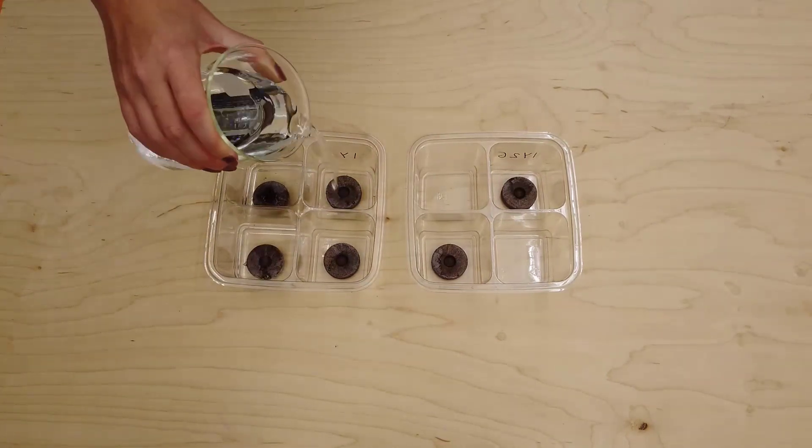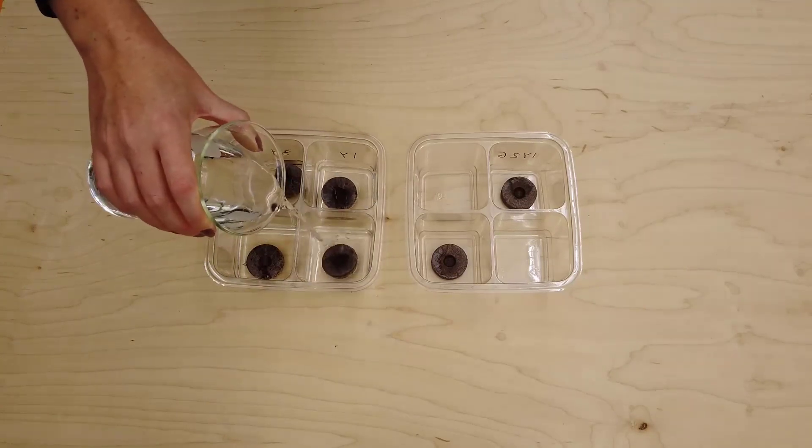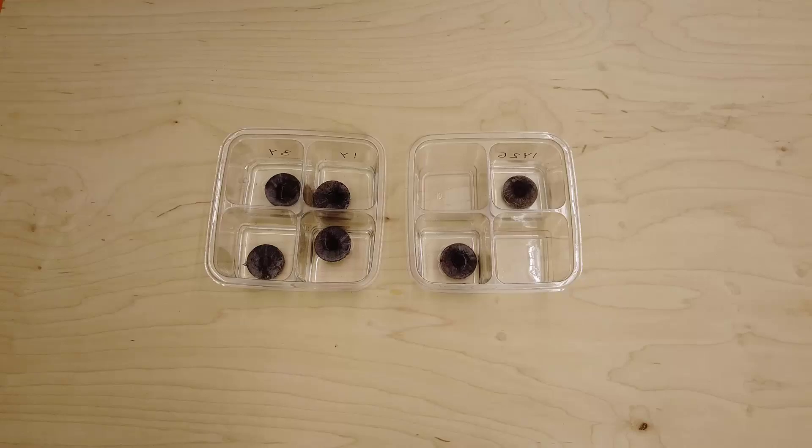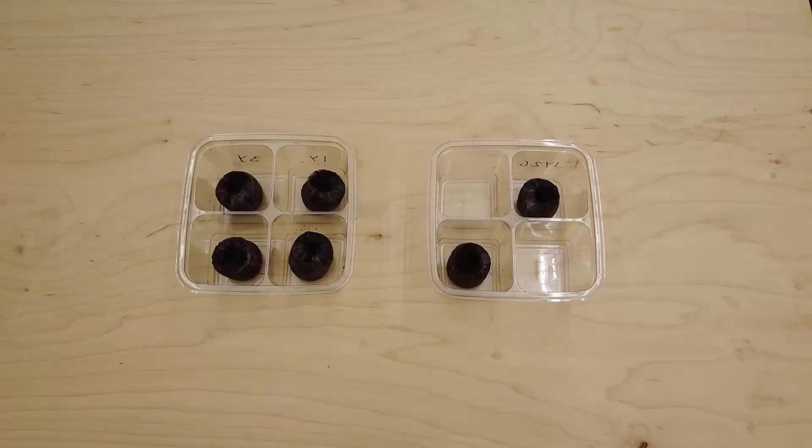Fill each labeled compartment 1 third of the way up with water and leave the pellets to soak and expand for 30 to 60 minutes. After they have expanded, drain the excess water.